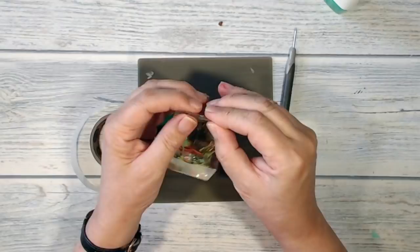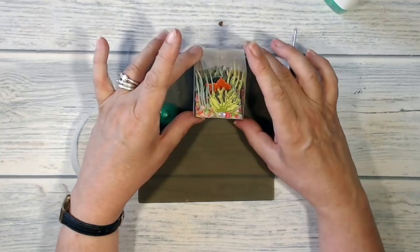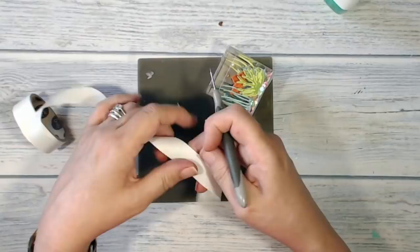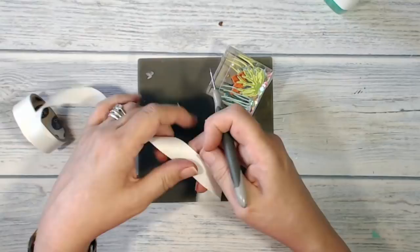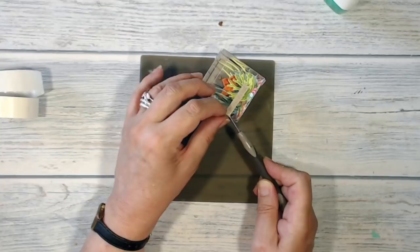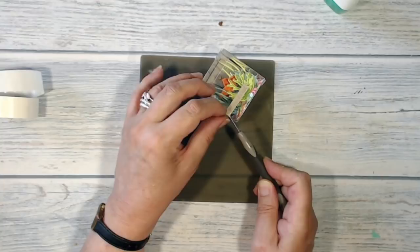There's just one more thing and that is to add a sentiment. So I've gone ahead and I've stamped this onto my crumb cake with my soft suede ink. And I'm just going to stick that into place with a glue dot. And the sentiment is from the Sea of Textures set. And just press that down. And there you go. That's finished.